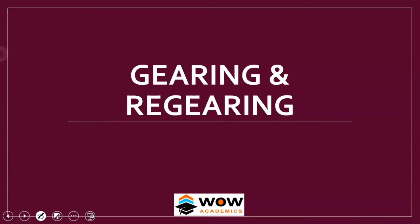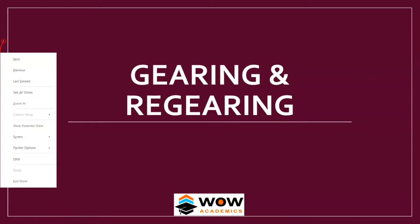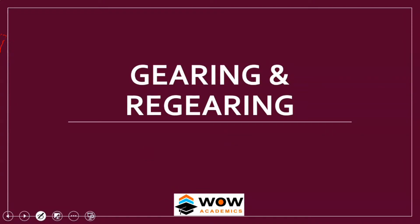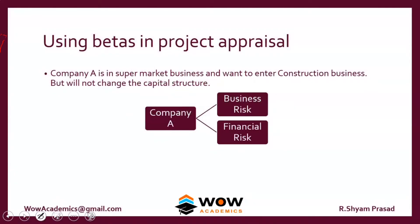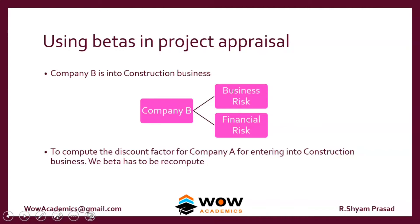We will move on to the topic called Gearing and Regearing. Company A is in the supermarket business and wants to enter into construction business, but will not change the capital structure. So company A has two risks: one is business risk and the other one is financial risk. Company A wants to enter into the construction business, so we have to look at the construction business.